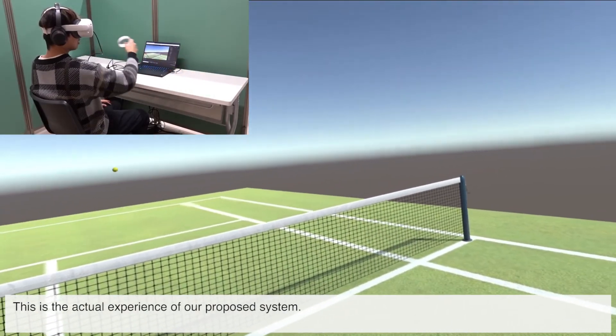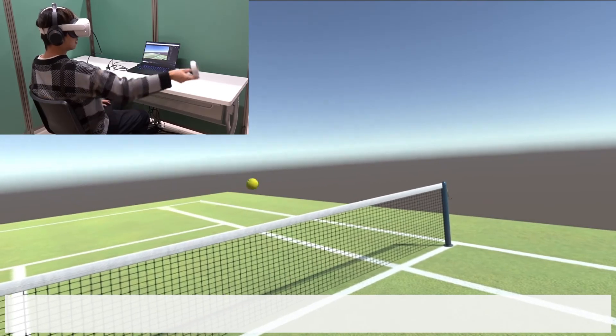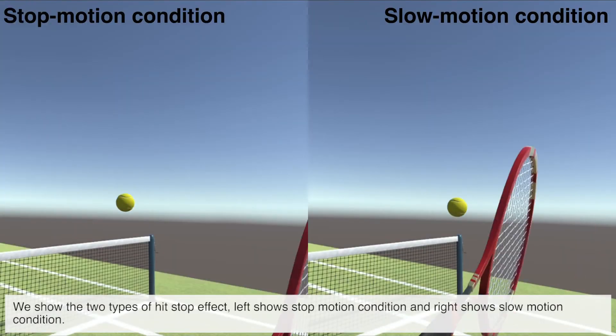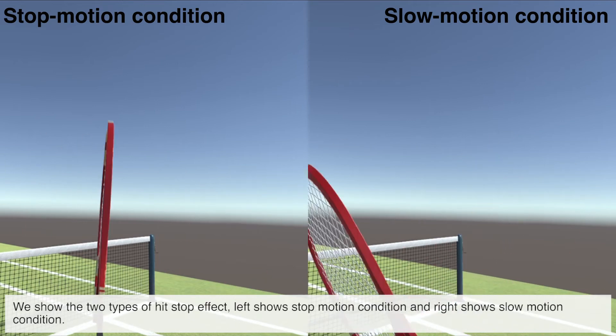This is the actual experience of our proposed system. We show the two types of hit stop effect. Left shows stop motion condition and right shows slow motion condition.